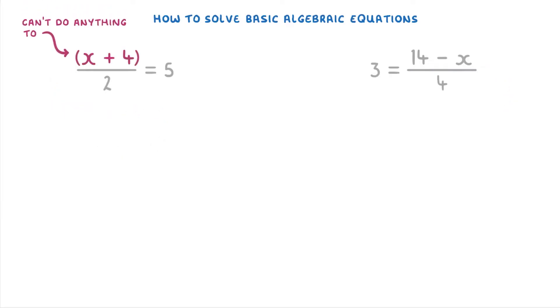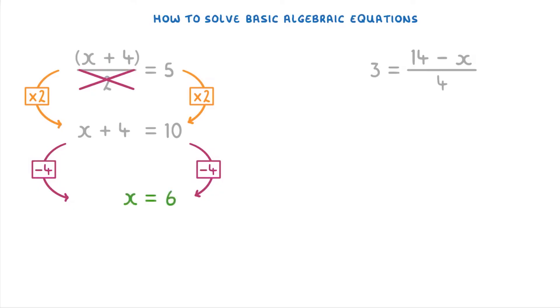Because of this, we can't do anything to the x plus 4 until we get rid of the fraction. So the first thing we need to do in cases like this is multiply both sides by 2, which will cancel out the divide by 2 on the left, and turn the 5 into a 10. And now that x plus 4 is the only thing left on the left-hand side, we're free to take away the 4 from both sides, which will leave us with just an x on the left and 6 on the right. So x is 6.